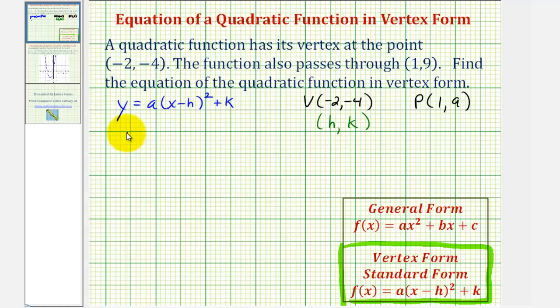So we'd have y equals a times the quantity x minus h is negative two, so we'll have minus negative two. We'll simplify this in a minute. Squared and then plus k where k is negative four. Let's go ahead and simplify this. Minus negative two would be plus two. So we have y equals a times the quantity x plus two squared, and then instead of writing plus negative four, let's just write minus four.